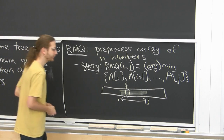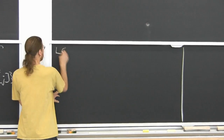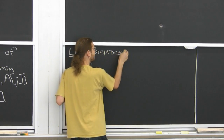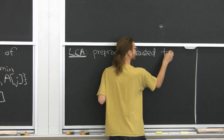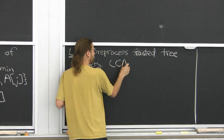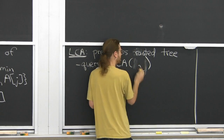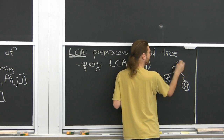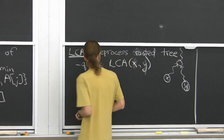This is a non-tree problem, but it will be closely related to a tree problem — namely LCA. The LCA problem is: you want to preprocess a rooted tree, and the query is LCA of two nodes x and y. You want to find their lowest common ancestor. They have shared ancestors at some point, and we want to find the lowest one.